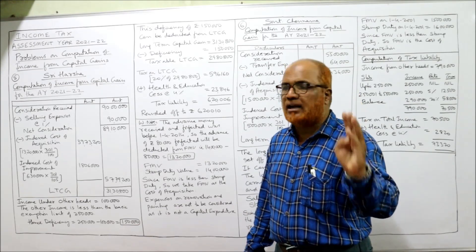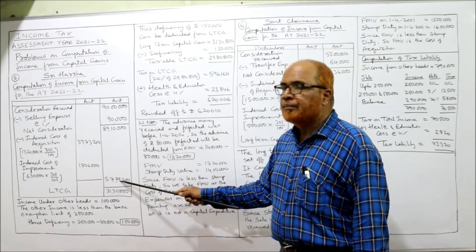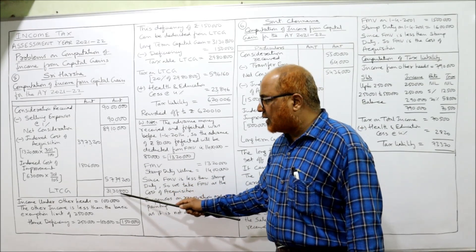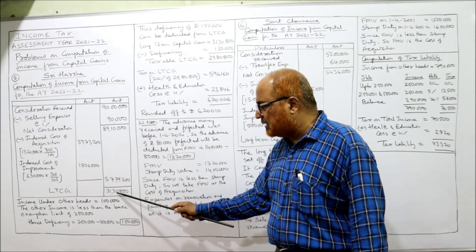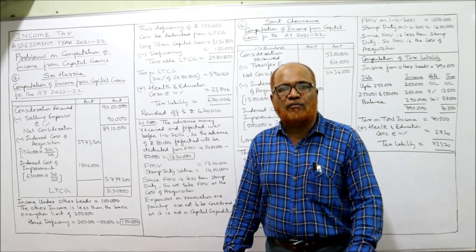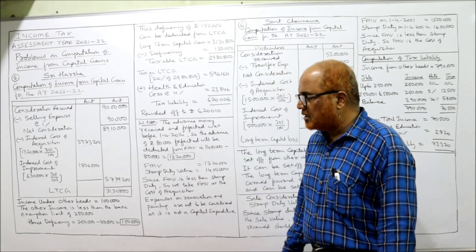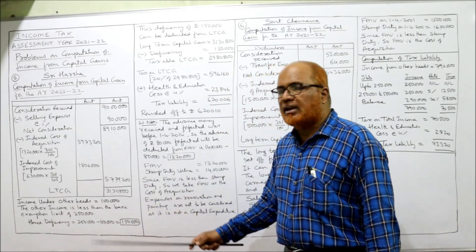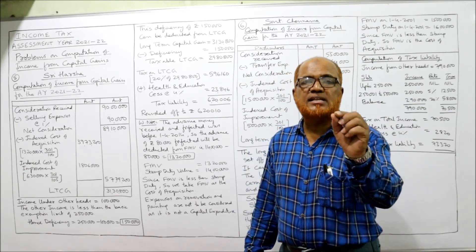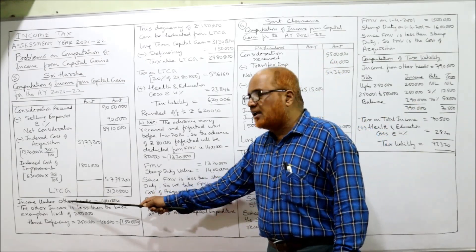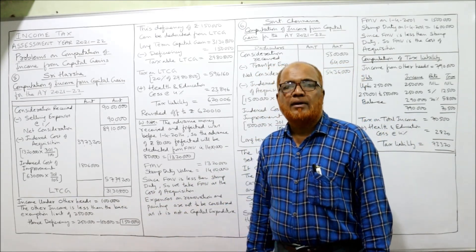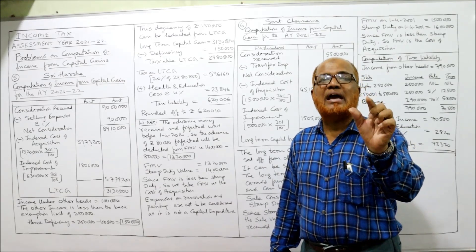Now: Rs. 89,10,000 minus Rs. 57,79,000 gives a long-term capital gain (LTCG) of Rs. 31,30,800. This is the LTCG on which there is a flat rate of tax of 20%. Income under other heads is Rs. 1 lakh. This LTCG is special income taxed at a flat rate of 20%, whereas other income is normal income. The normal income is only Rs. 1 lakh, and the basic exemption limit is Rs. 2,50,000.